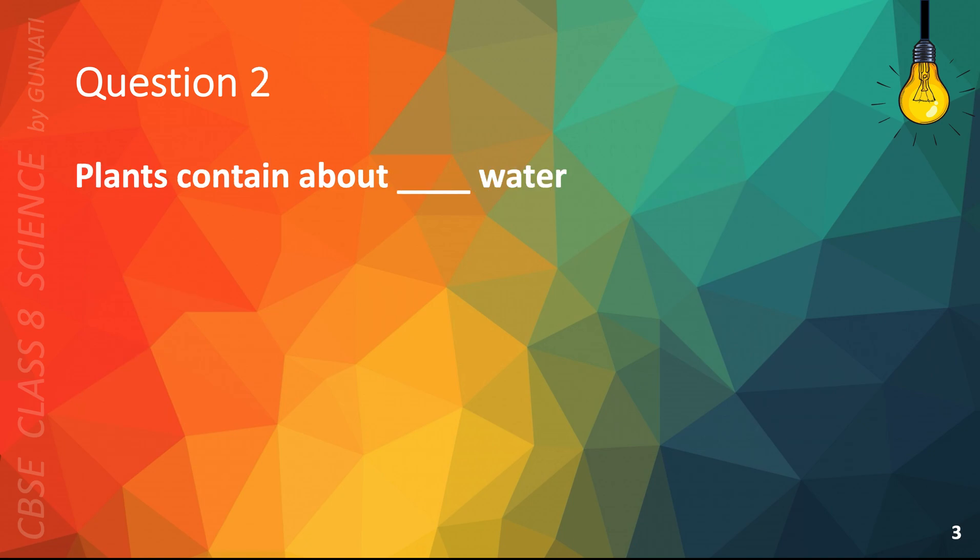Question 2. Plants contain about blank water. A. 10%, B. 0%, C. 50%, or D. 90%.